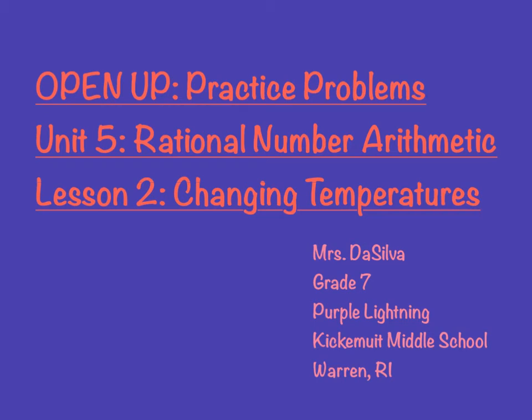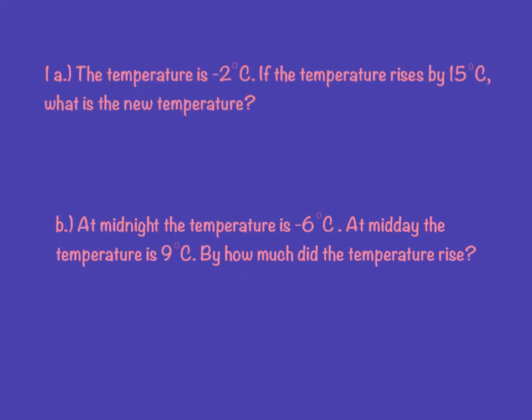Now we're going to go over the practice problems for Unit 5 Lesson 2, the changing temperatures. So the temperature is negative 2 degrees Celsius. The temperature rises by 15 degrees — that's where it starts. It rises by 15. What's the new temp?